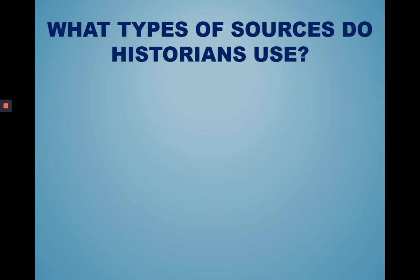Primary sources were created during a specific time or event by someone who participated or lived in that time. Secondary sources, on the other hand, are created after the fact and by someone that was not directly involved in the event. A great example of a secondary source would be a textbook.